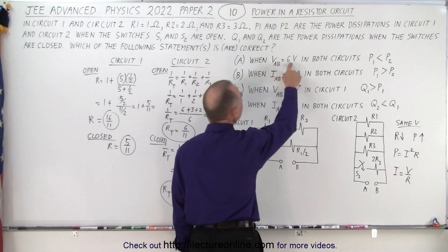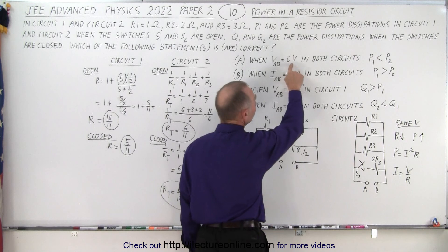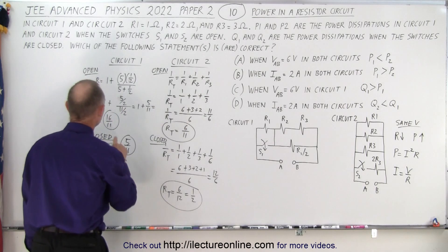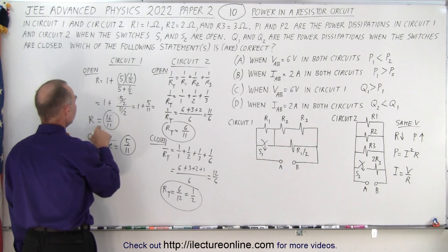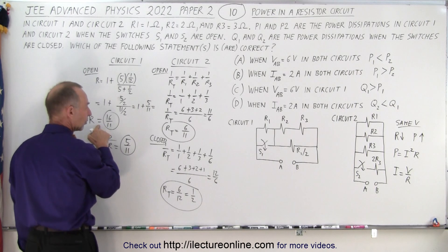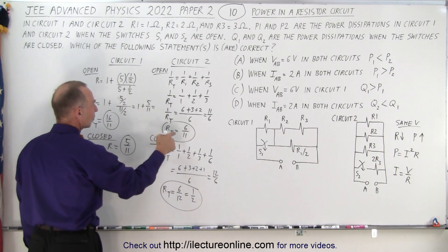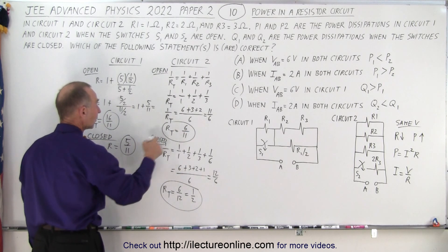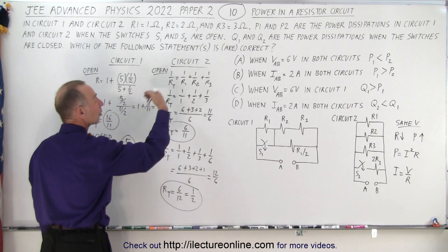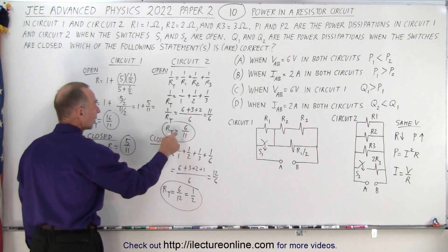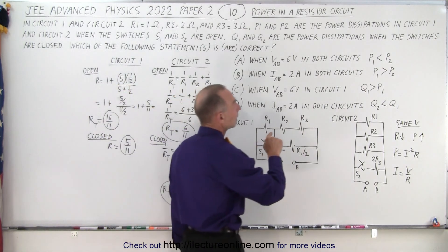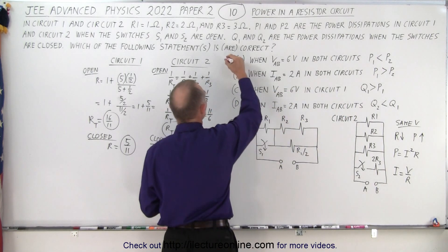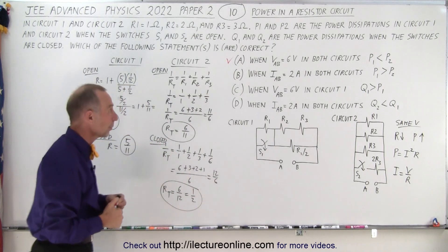For statement A: when VAB, the voltage between A and B, is 6 volts in both circuits, is P1 less than P2? Notice that 6/11 (circuit 2's resistance) is smaller than 16/11 (circuit 1's resistance). Smaller resistance means larger power dissipation, so P2 is bigger than P1 — and that's what the statement says. Statement A is indeed correct.